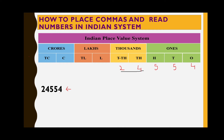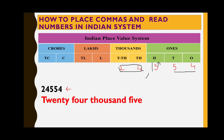While we write places from the right side of the number, we read from the left. Here we have two periods: the thousands period and the ones period. Two and four come under the thousands period, and five, five, four come under the ones period. We place a comma at the thousands period, giving us: twenty-four thousand five hundred fifty-four.